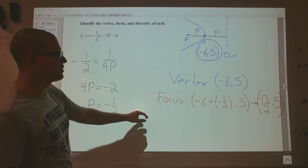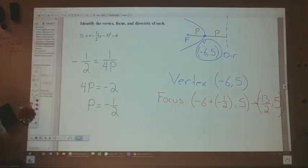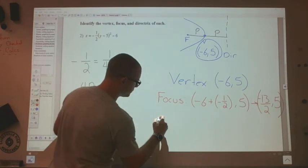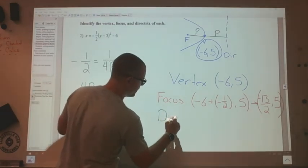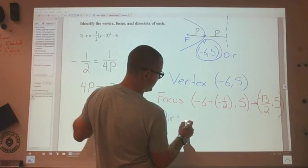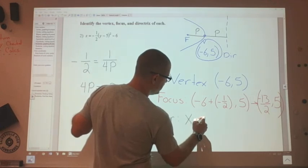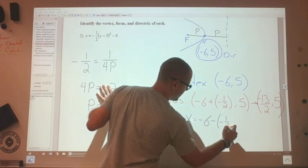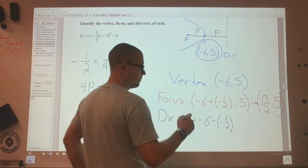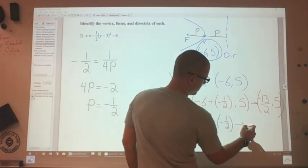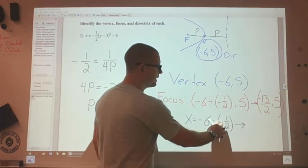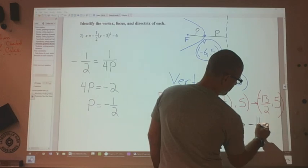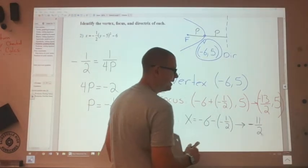And then for the directrix, same idea, just with subtraction. So the directrix will be at x equals negative 6 minus p. In this case, negative 1/2. So negative 12 halves minus the negative, that's going to be at negative 11 halves. And that's it.